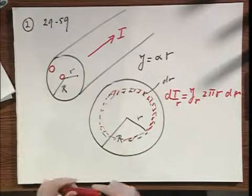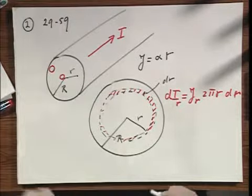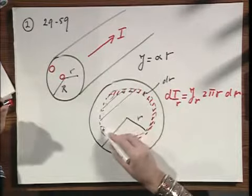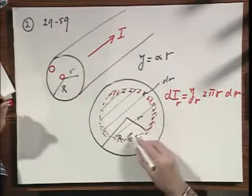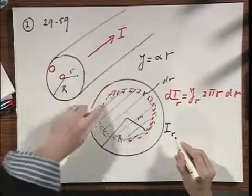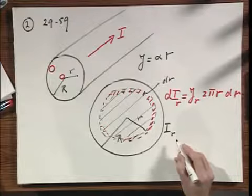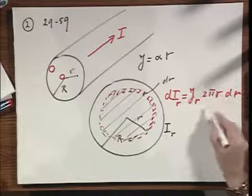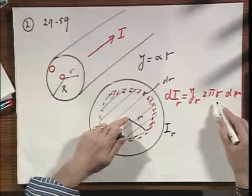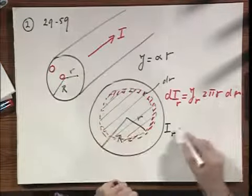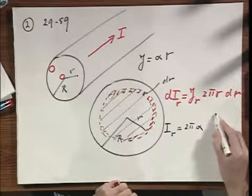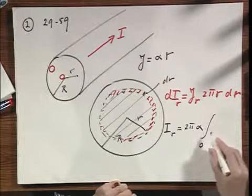So if I want to know the total current that flows in this whole surface area, in other words, up to radius R, so I up to radius R, including this whole area, then I have to do an integral. R has to go from zero to R.